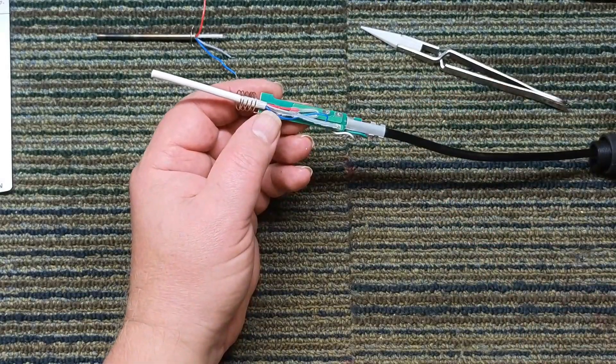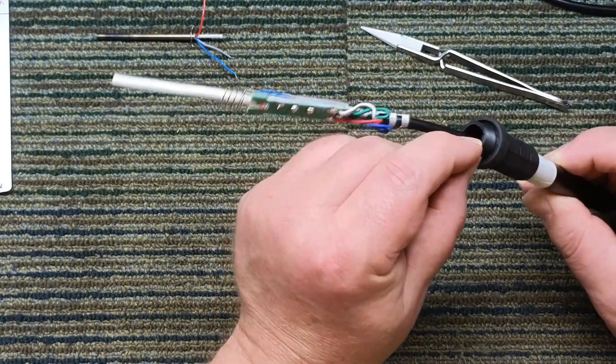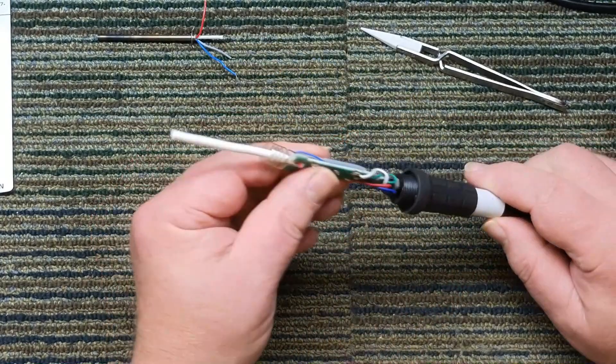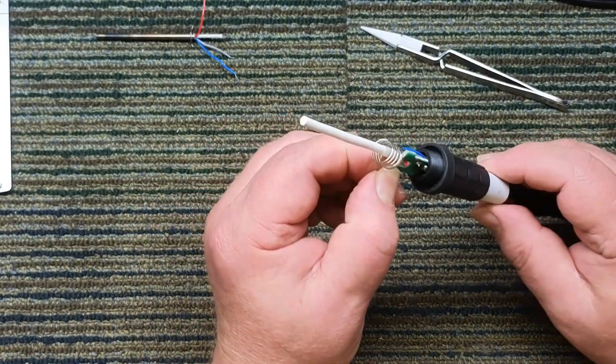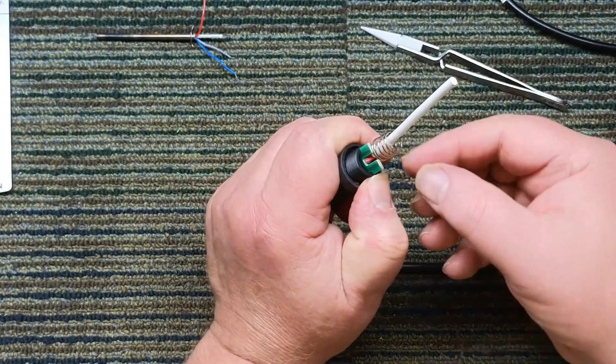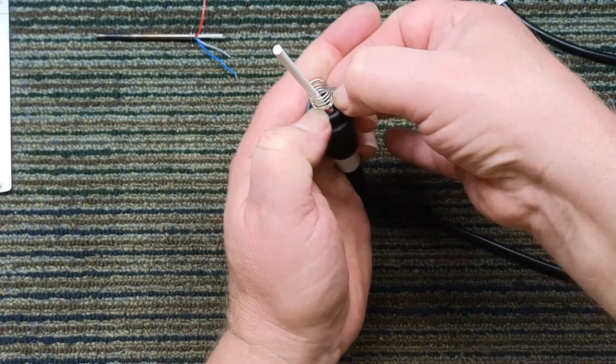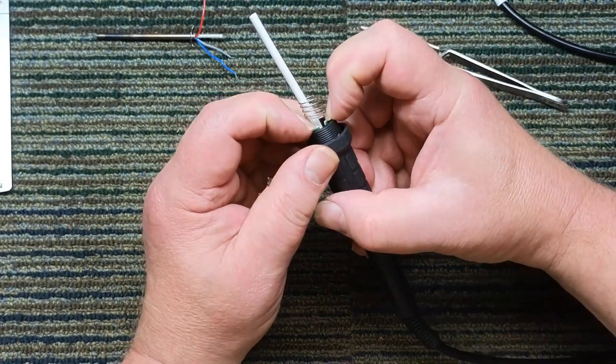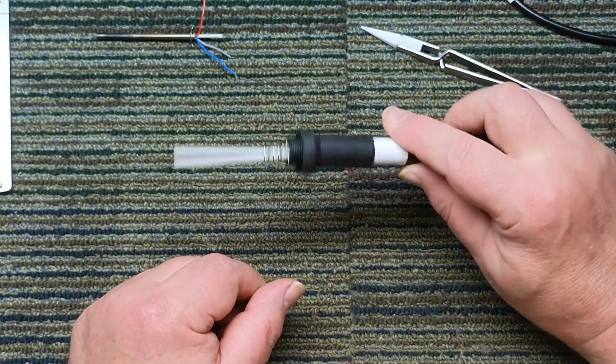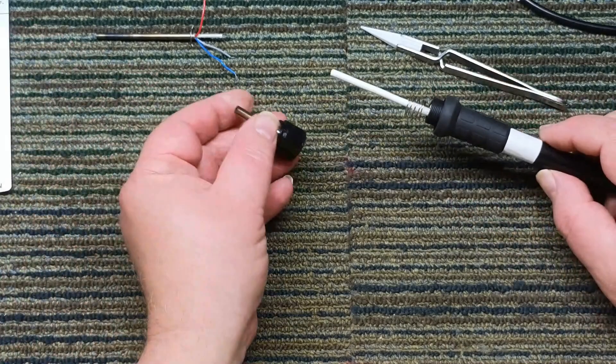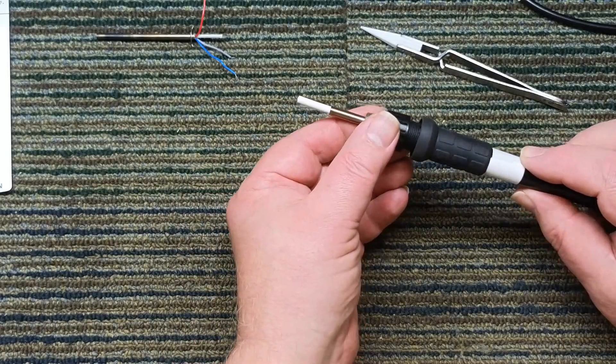So then we just take our tube. Remember you've got slots on each side, and that board will fit into the slot. Take your thumbnail and push it down flush. There you go. Take this part, slide it over, screw it in.